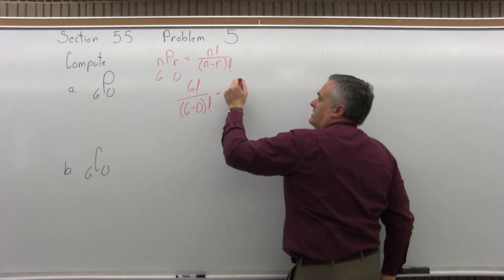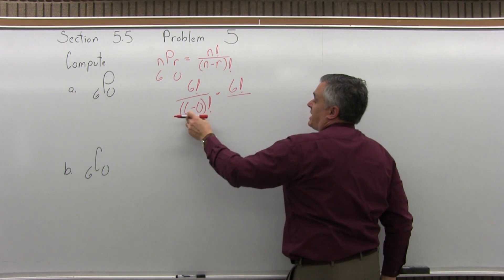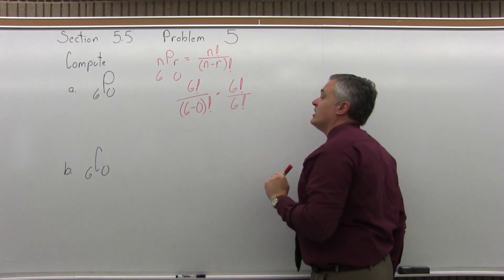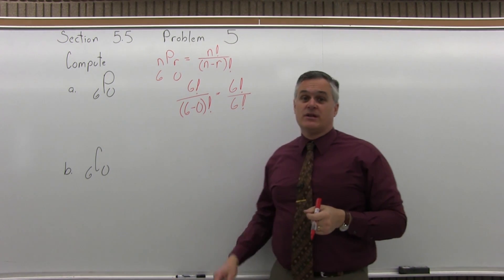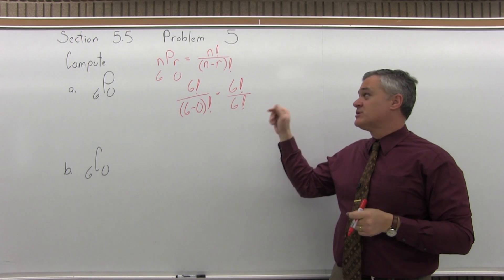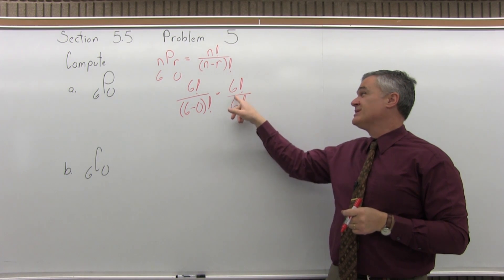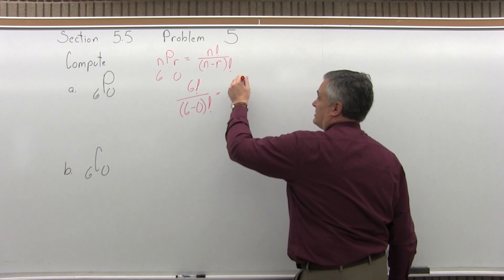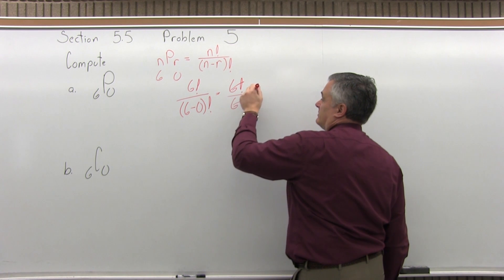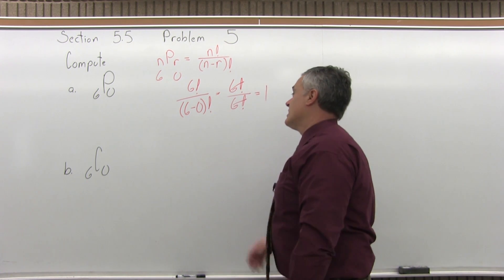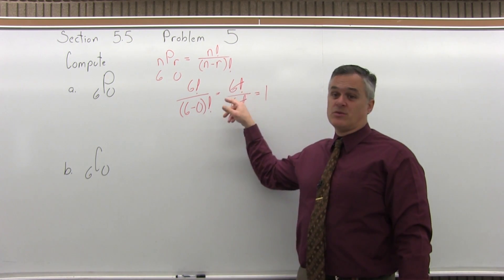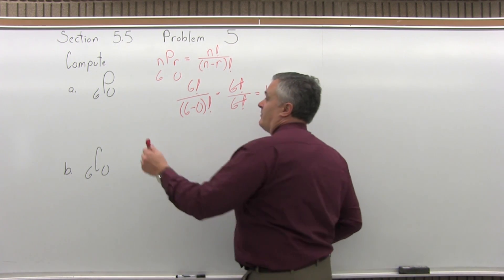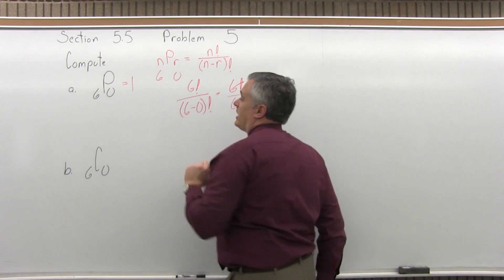Simplify the parentheses: 6 minus 0 is 6, giving 6 factorial over 6 factorial. You can write it out as 6 times 5 times 4 times 3 times 2 times 1, but you can see you have the same value over itself, so it cancels and reduces to 1. That gives 720 over 720, which reduces to 1. So 6 permutation 0 is 1.